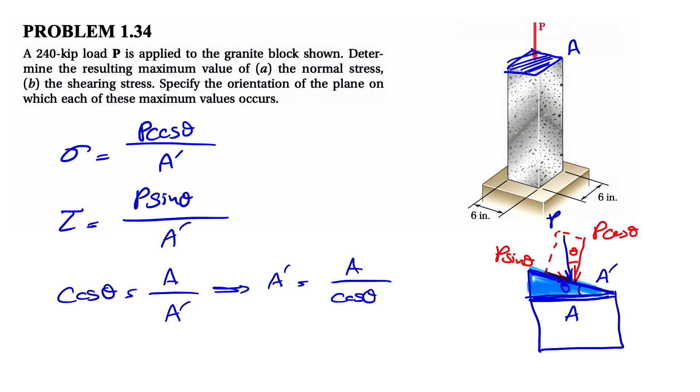If we plug this into these two equations, from the first one the cosine of theta can go to the top of the ratio, we have P times cosine squared of theta over A. And here we have P sine of theta times cosine of theta over A. So these are two general formulas for finding the normal stress and the shearing stress.